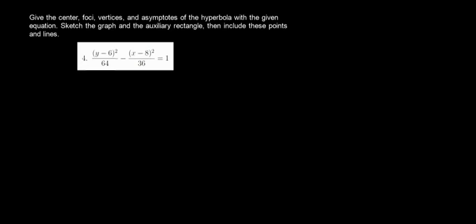Give the center, foci, vertices, and the asymptotes of the hyperbola with the given equation. Sketch the graph and the auxiliary rectangle, then include these points and lines. For this video, we're going to sketch the graph of the hyperbola with equation (y-6)² over 64 minus (x-8)² over 36 equals 1.